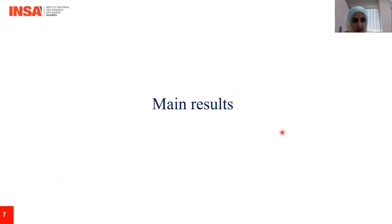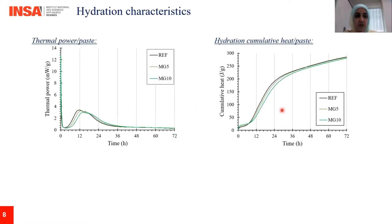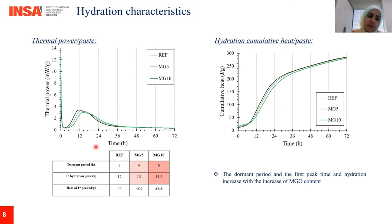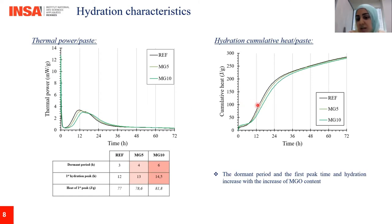Let's discuss some of the results. Starting with the hydration characteristics, the thermal power and the hydration heat were characterized by isothermal calorimetry. From these two figures, you can see that the dormant period of the mixture increased with the increase of MgO content, as well as the first hydration peak and its corresponding released heat.